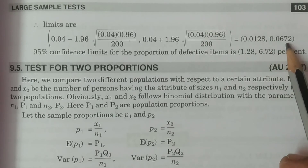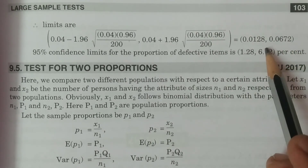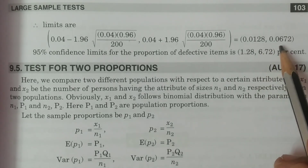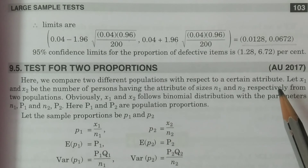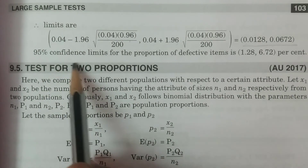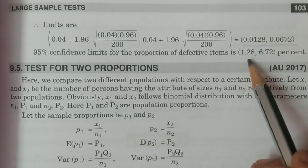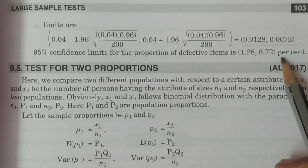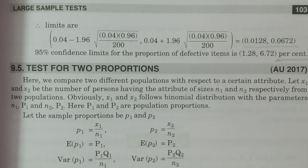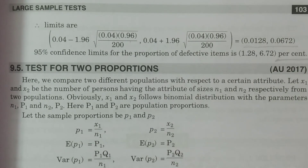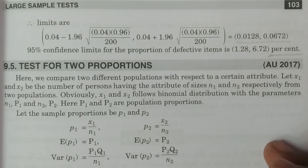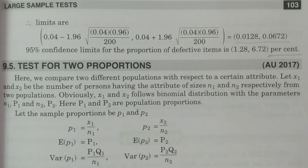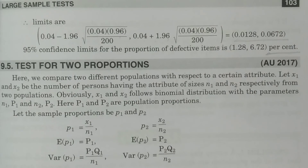So the number of defectives lies between approximately 1.28% and 6.72%. That is the 95% confidence limits for the population proportion of defective items. The number of defective items would lie within this particular percentage range — that is the important purpose of calculating confidence intervals. I hope you understand. Thank you very much.